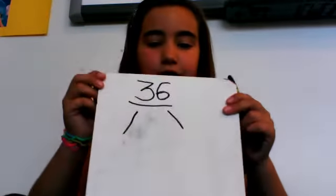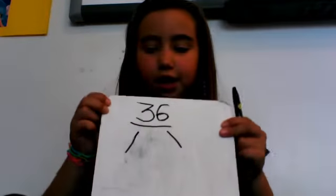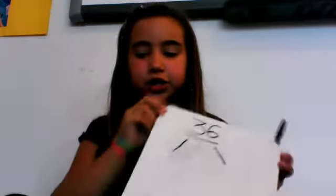Hi, today I'm going to teach you about prime factorization. First, you choose a composite number. Then you find two factors, and if you multiply them together, they should equal the number you chose.